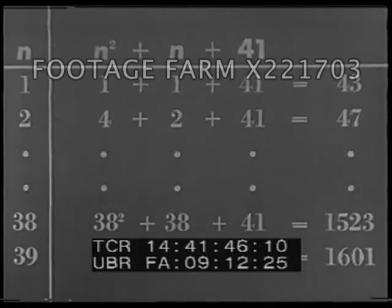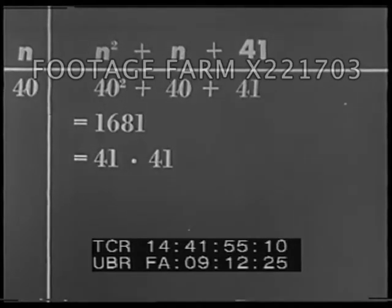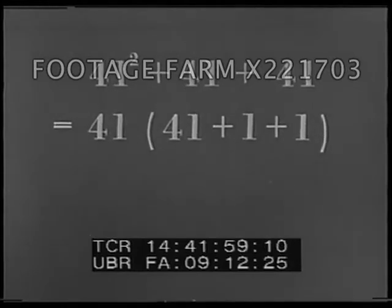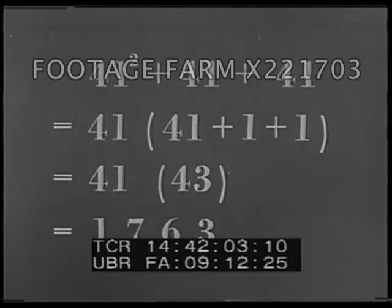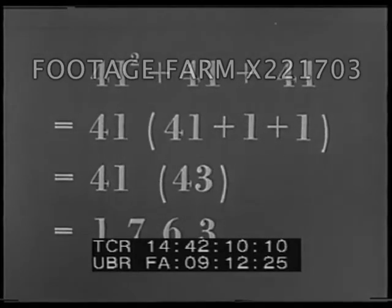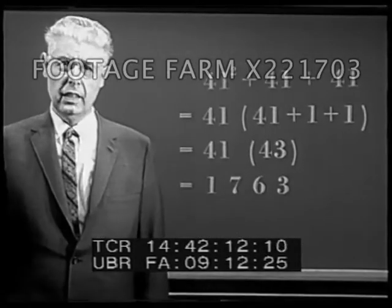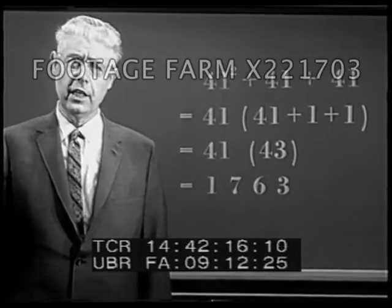But clearly, for n equal to 40, we get 1681, which is 41 times 41. And for n equals 41, we get 41 times 43. Certainly 1763 is not a prime number, being 41 times 43. And so our pattern does not universally yield prime numbers.